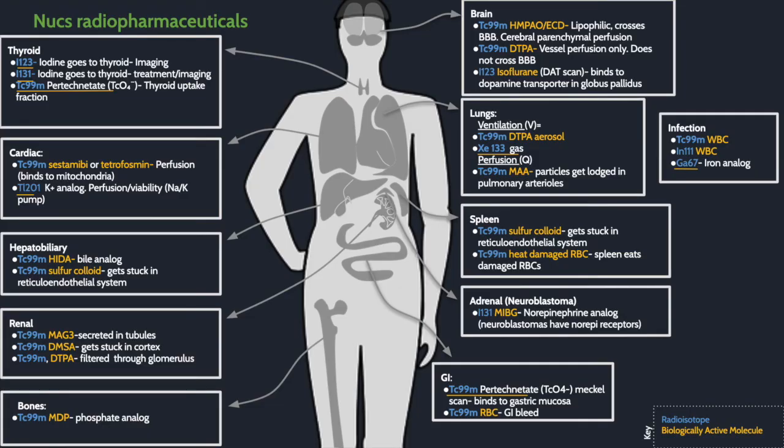Here is a chart of commonly used nuclear medicine radiopharmaceuticals and the physiologic analogues. Keeping with the color coding, the isotopes are in blue and the biologically active molecules are in yellow. Some of the isotopes act like biologically active molecules themselves, so they are underlined in yellow. Although there are many more facts you need to know about each of these, knowing the physiologic analogues is the first and most important step to start interpreting images, so that's what I've listed here.